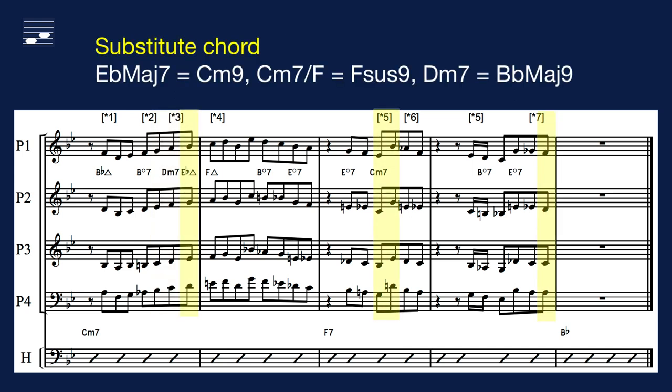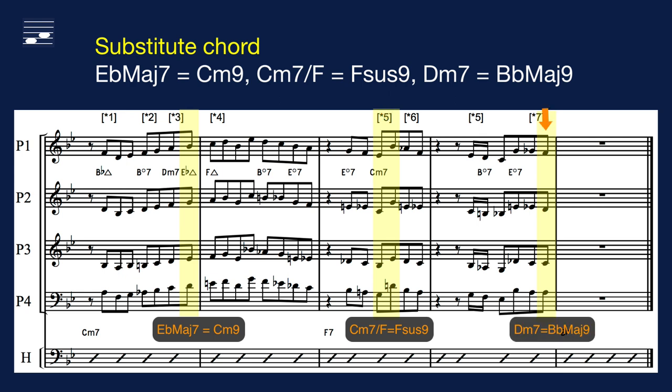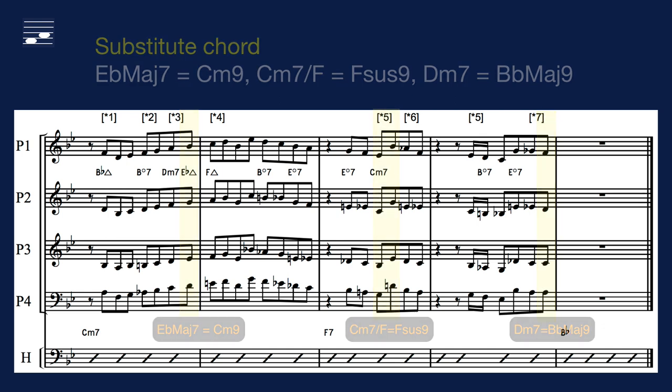The example contains three voicings with substitute chords, a technique introduced in episode 3. In measure 1, the Eb major 7 is equivalent to the C minor 9 chord. In measure 3, we use the Fsus9 chord as a voicing of C minor 7 over F in the bass. And the final measure has the D minor 7 as the equivalent of the Bb major 9 chord.